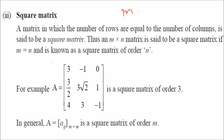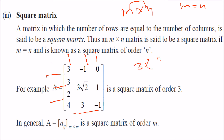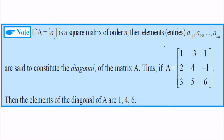A square matrix is one where m = n, meaning the number of rows equals the number of columns. For example, a 3 × 3 matrix. For a square matrix of order n, the elements a_11, a_22, … a_nn form the diagonal. A rectangular matrix that is not square cannot have a diagonal.